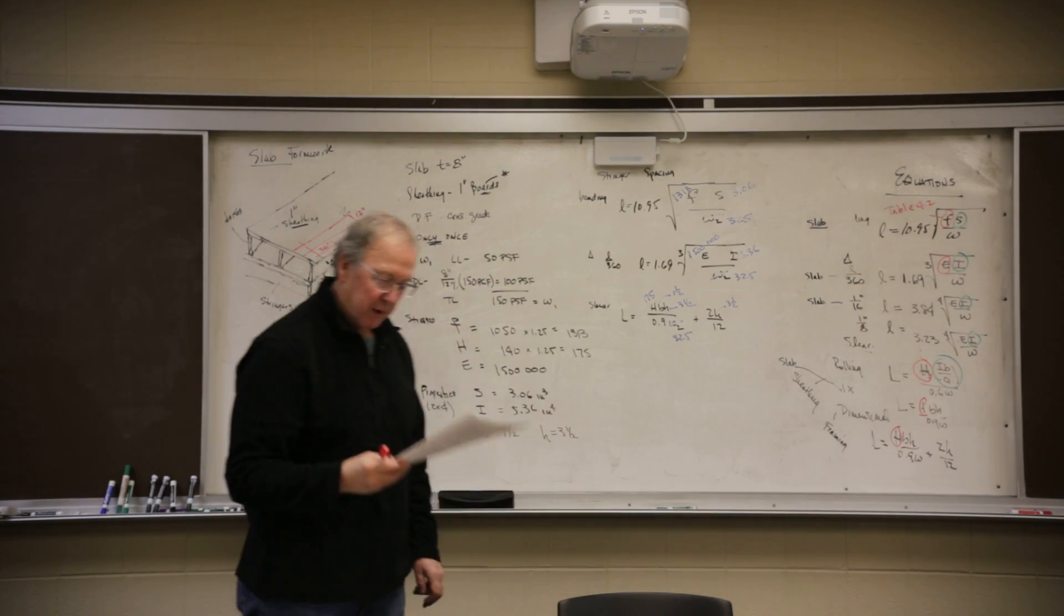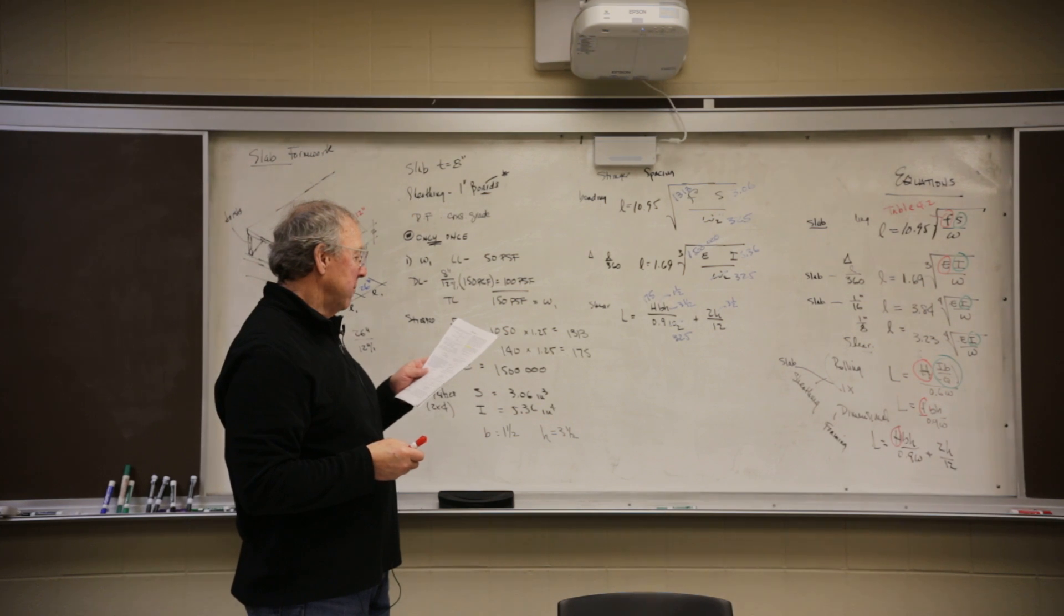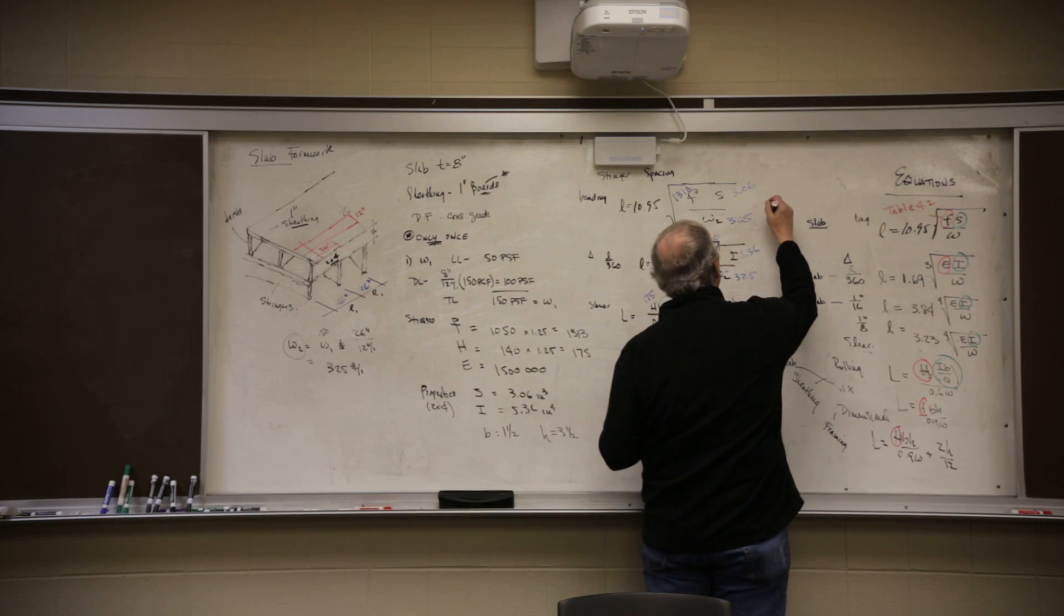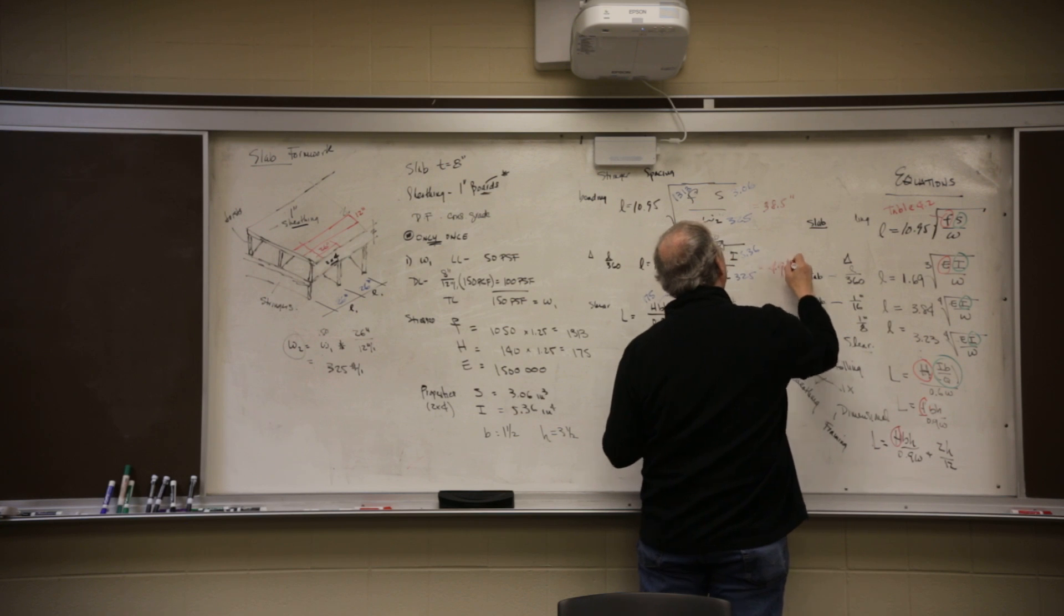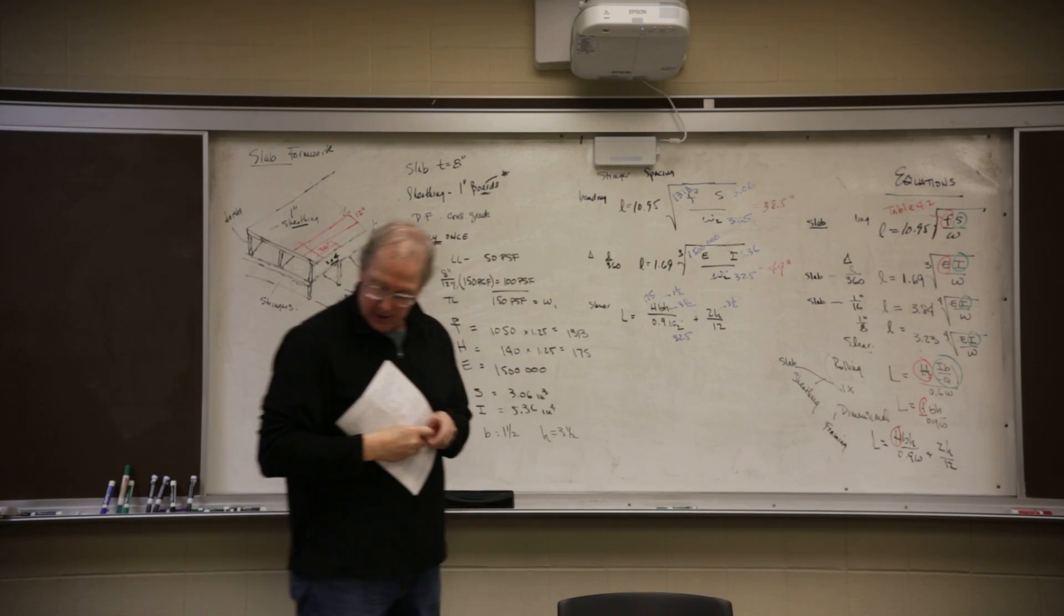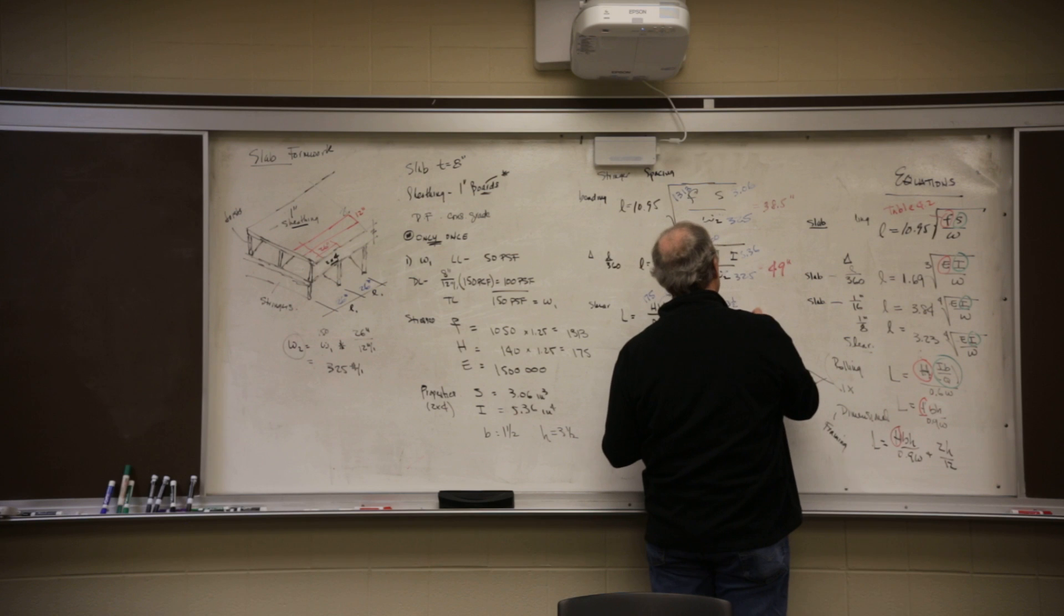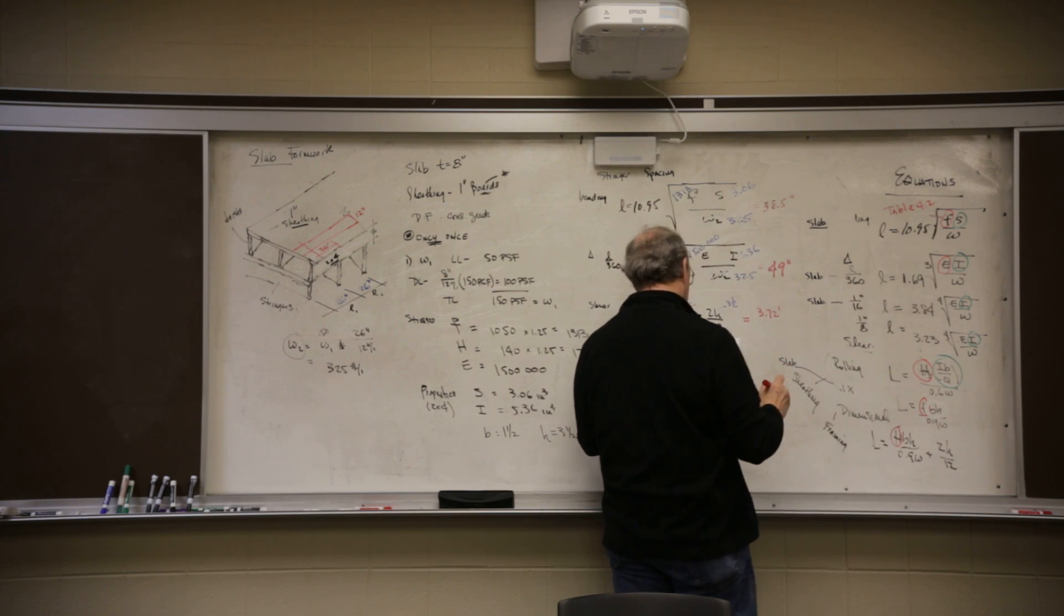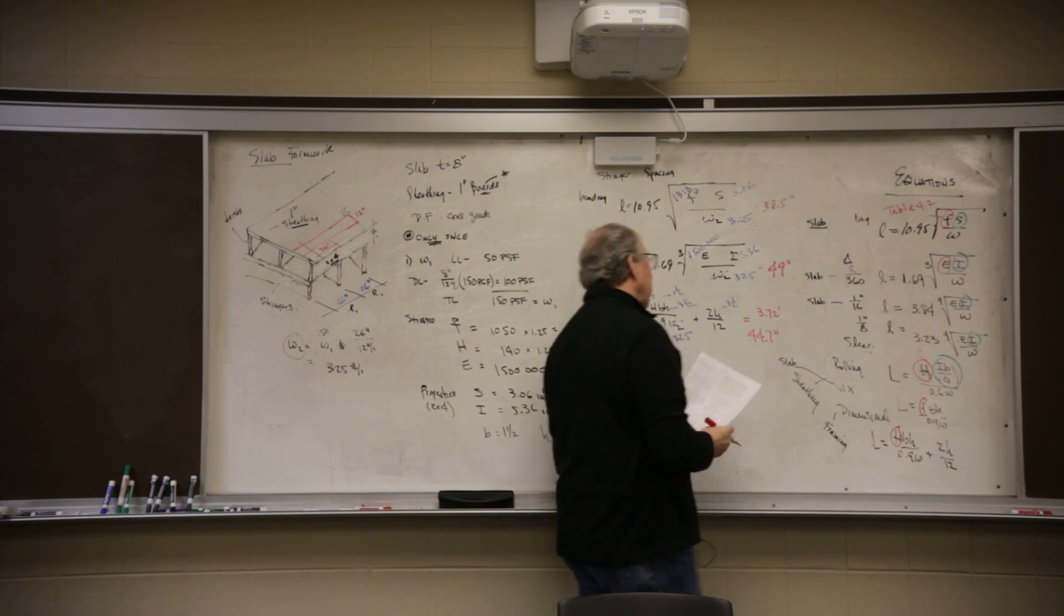Those should match the book. You should be on page 615, right hand column. Those numbers should all match exactly the same. And if they do, it comes out to 38.5 inches. The next one comes out to 49 inches. Okay, if that's 49, let me find something that works a little better here. 49 inches. And the last one comes out to 3.72 feet. Multiply it by 12, you get 44.7 inches. Got three numbers.